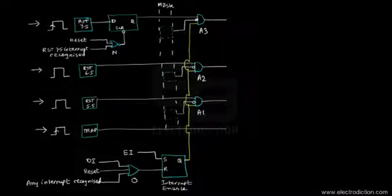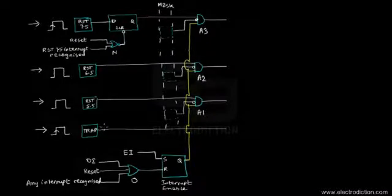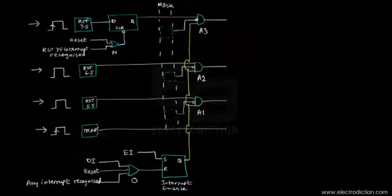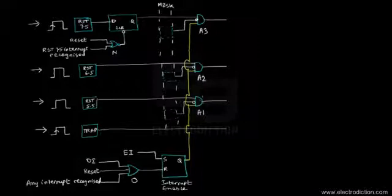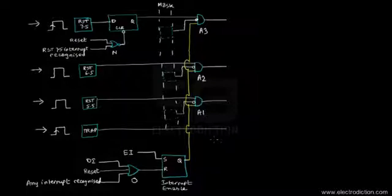For the TRAP pin, there was no control — and that's only because the input of the TRAP pin is not associated with any kind of control logic circuitry inside the 8085. The output of the TRAP pin just goes straight through without engaging with any internal logic control circuitry. That's why we cannot control TRAP.